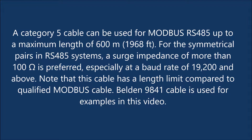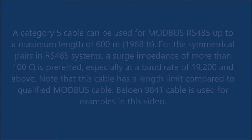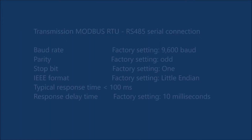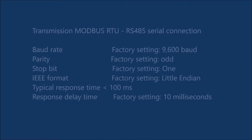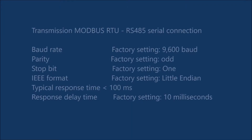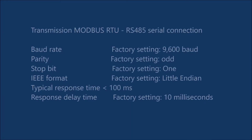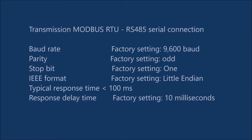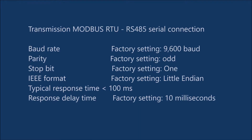Belden 9841 cable is used for examples in this video. Transmission: Modbus RTU RS-485 serial connection. Baud rate factory setting: 9,600 baud.